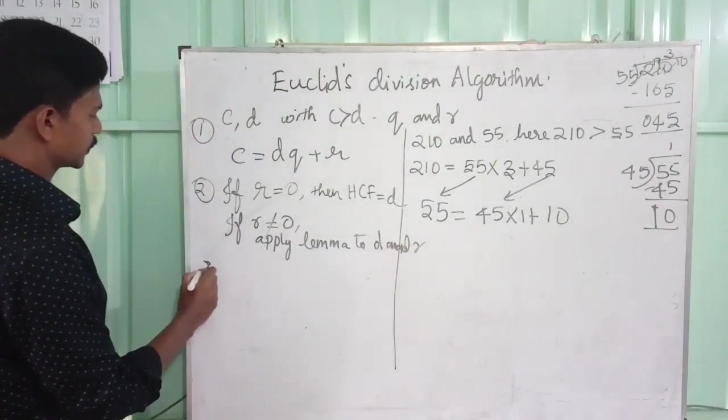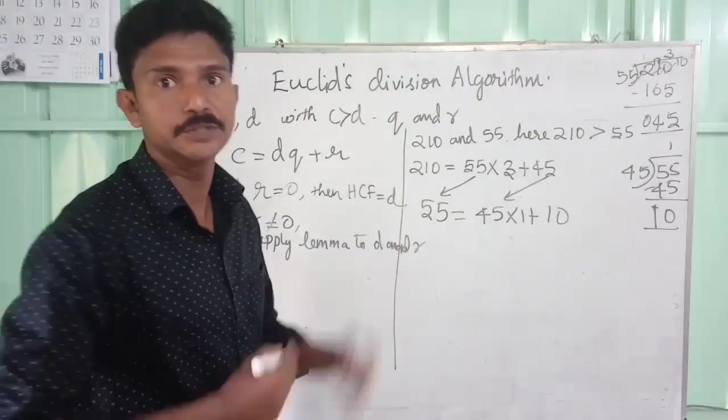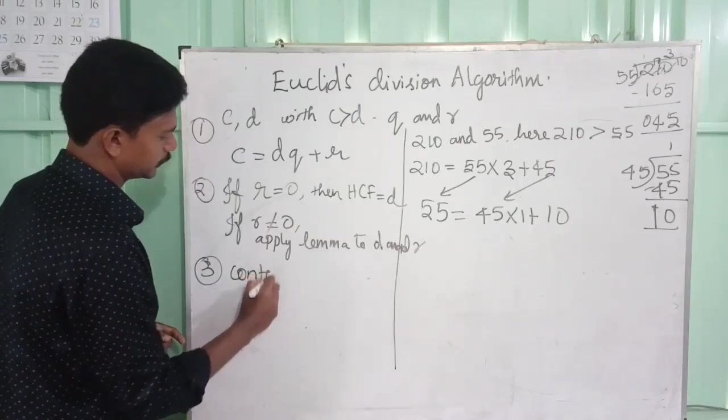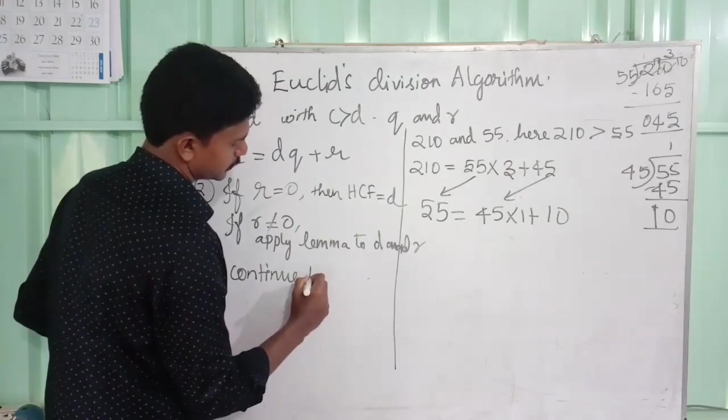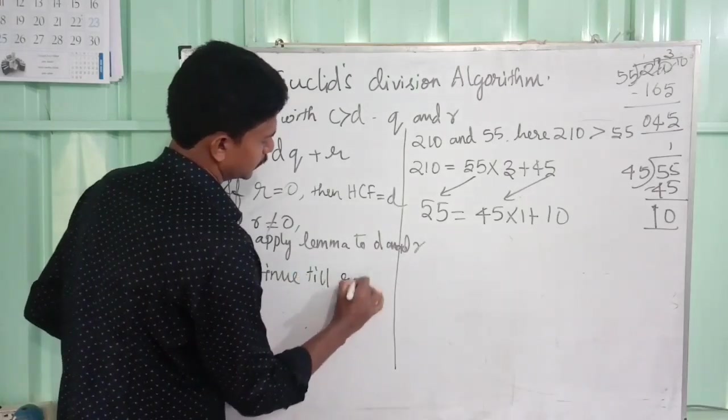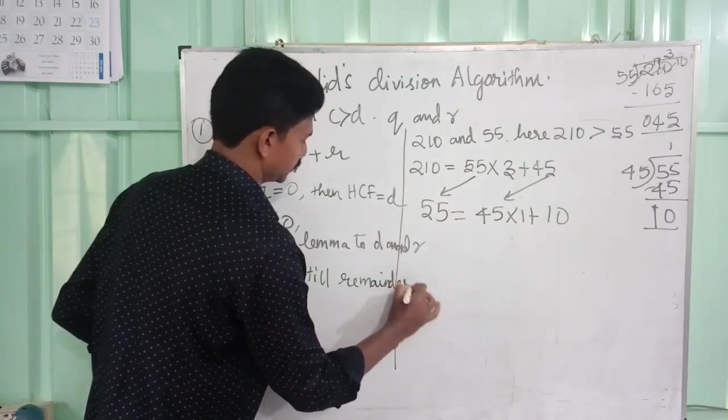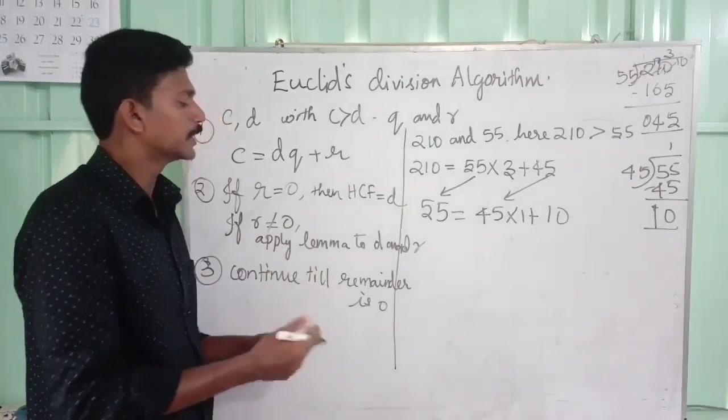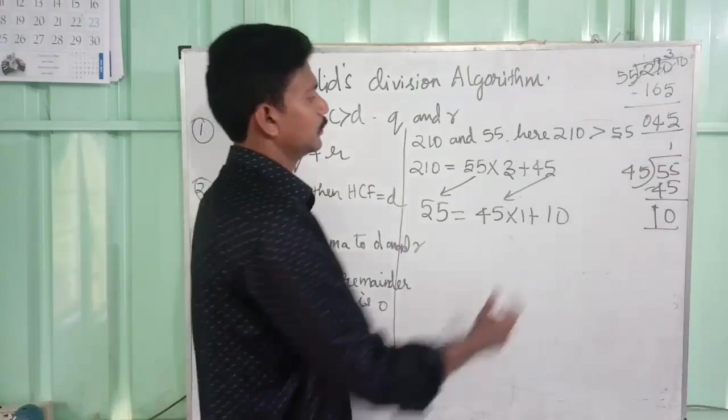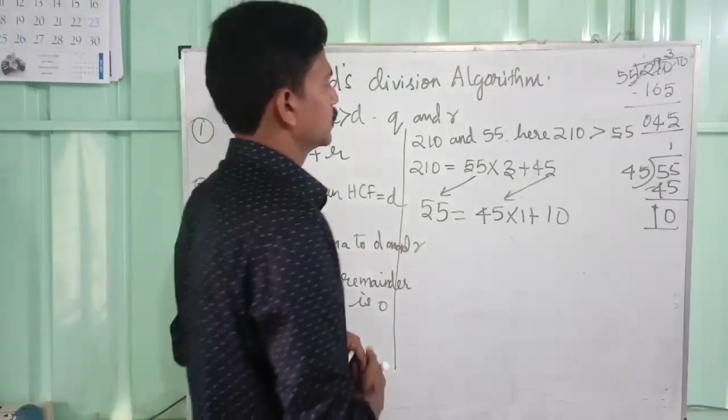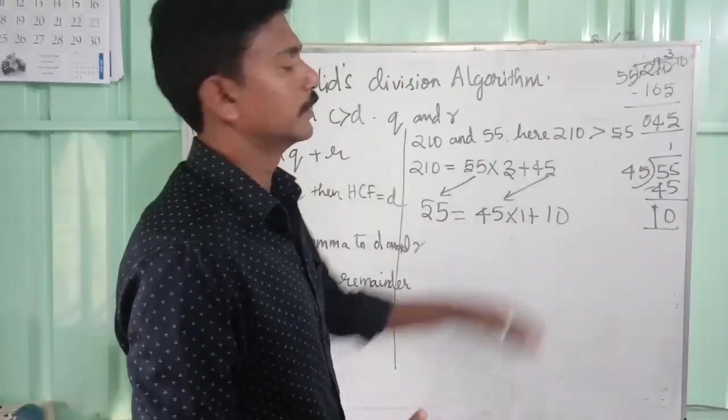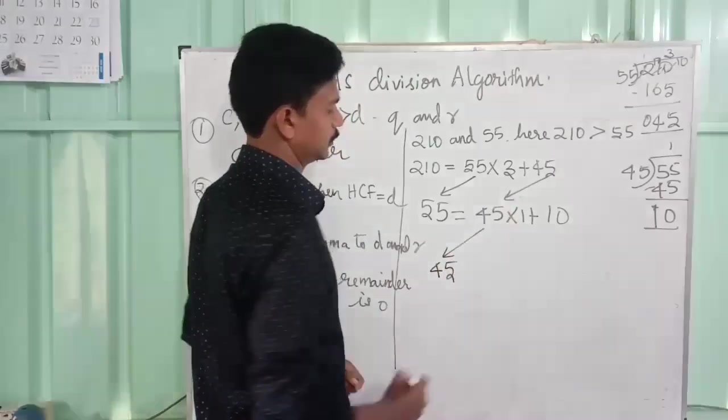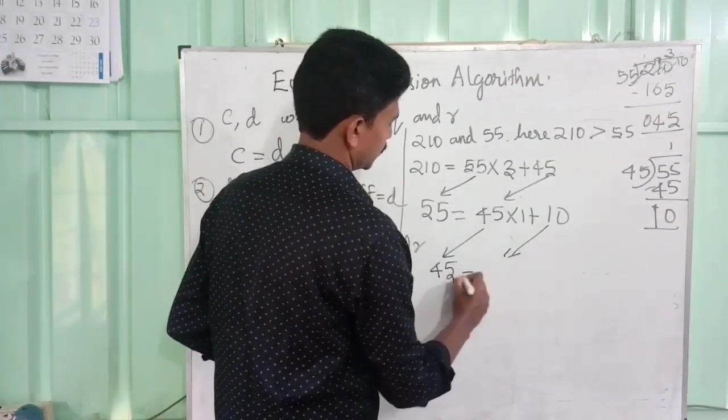So third step: you have to repeat the process. Continue this process until the remainder is 0. The remainder here is 10, which is not equal to 0. So we repeat this process, taking the divisor as dividend and the remainder also. We apply the lemma to divisor and remainder.